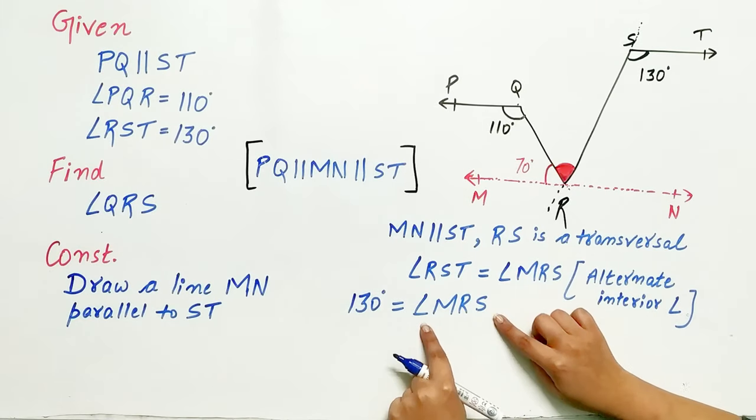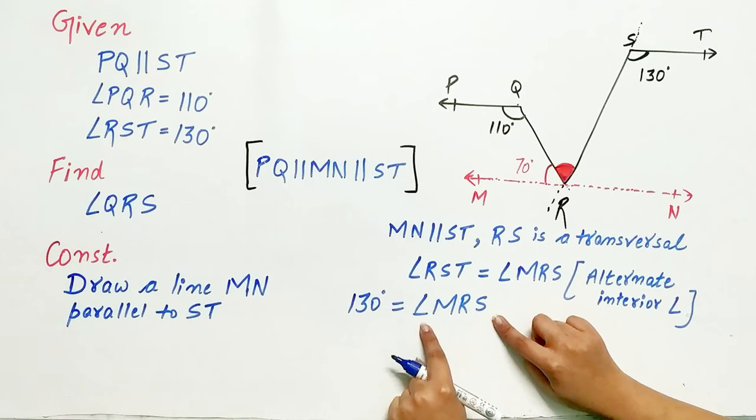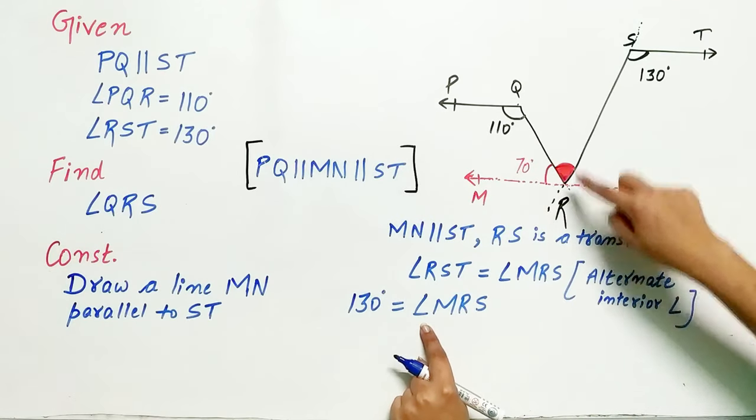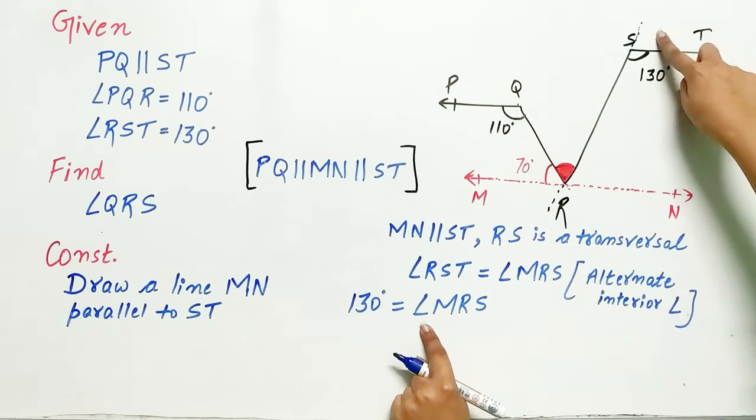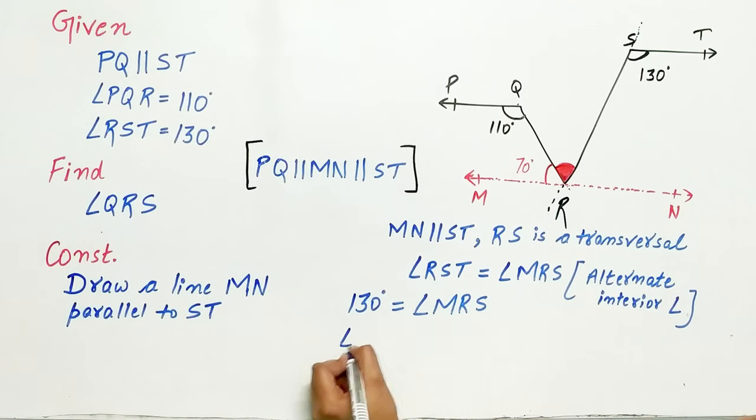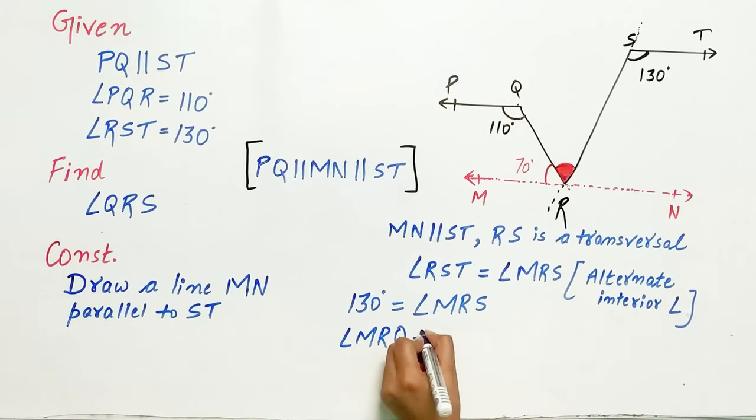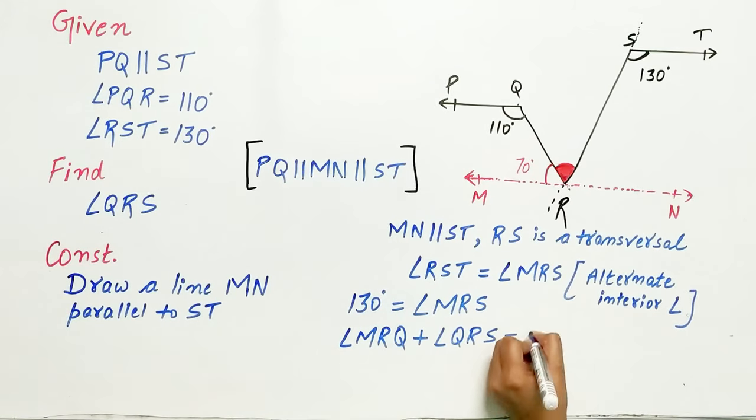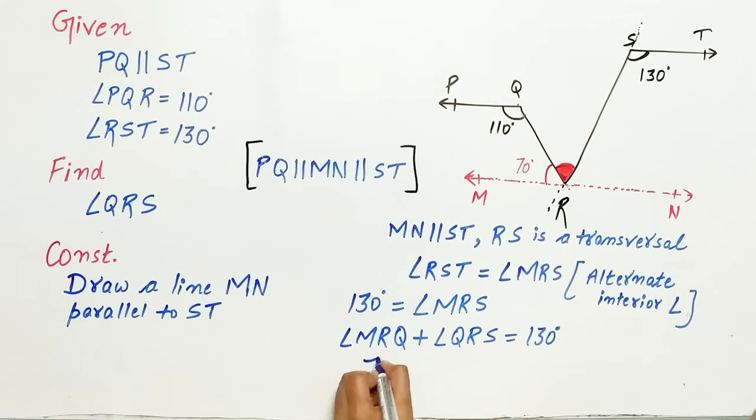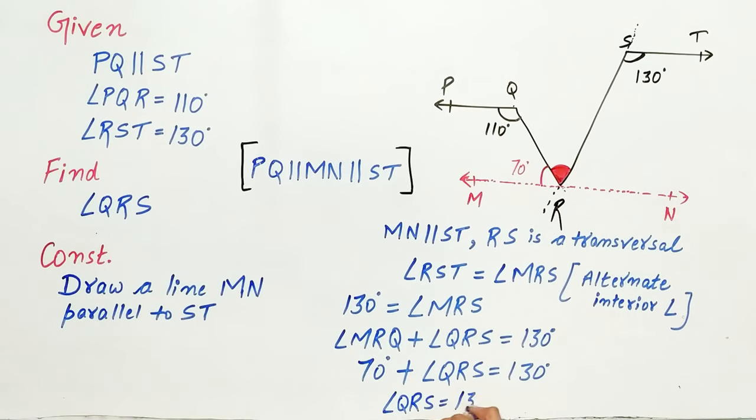Can I write angle MRS as the sum of angle MRQ and angle QRS? Angle MRQ plus angle QRS equals 130 degrees. Angle MRQ is 70 degrees. So angle QRS would equal 130 degrees minus 70 degrees which equals 60 degrees.